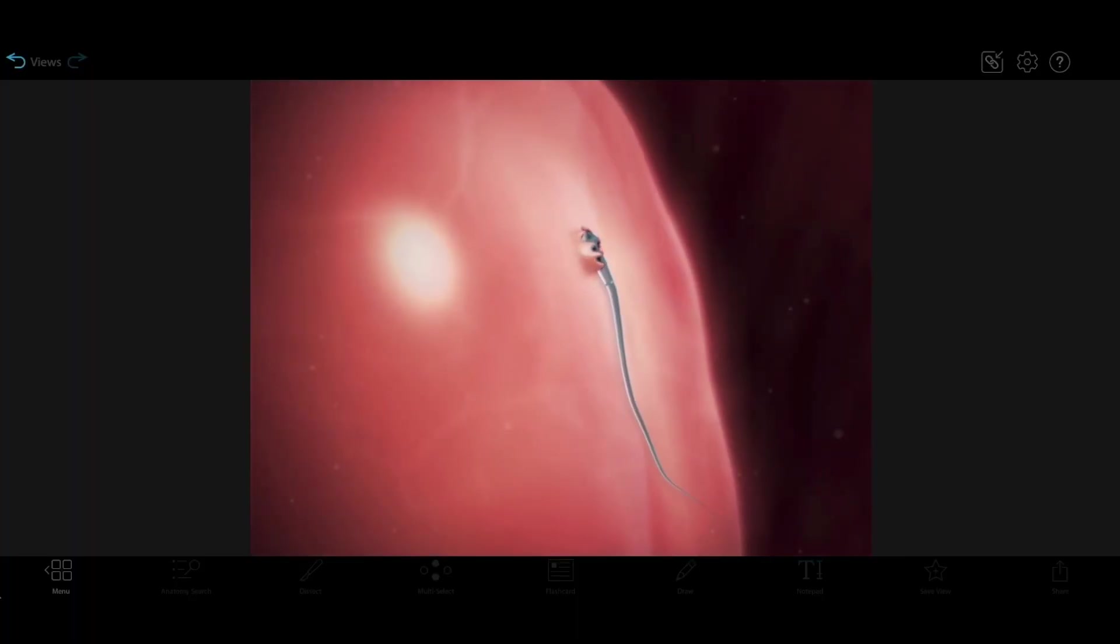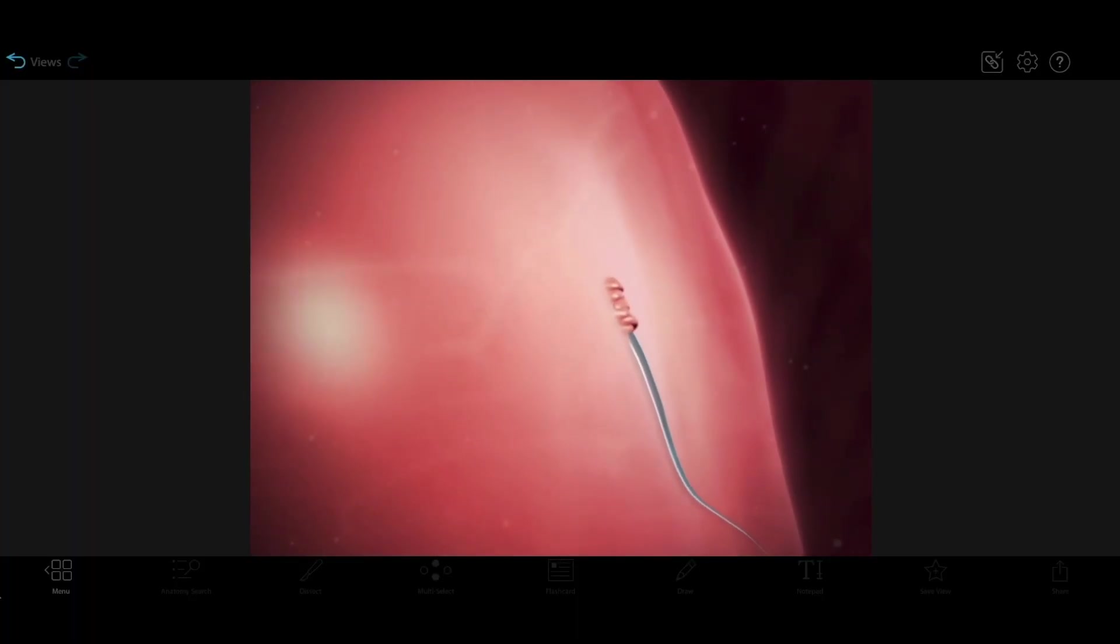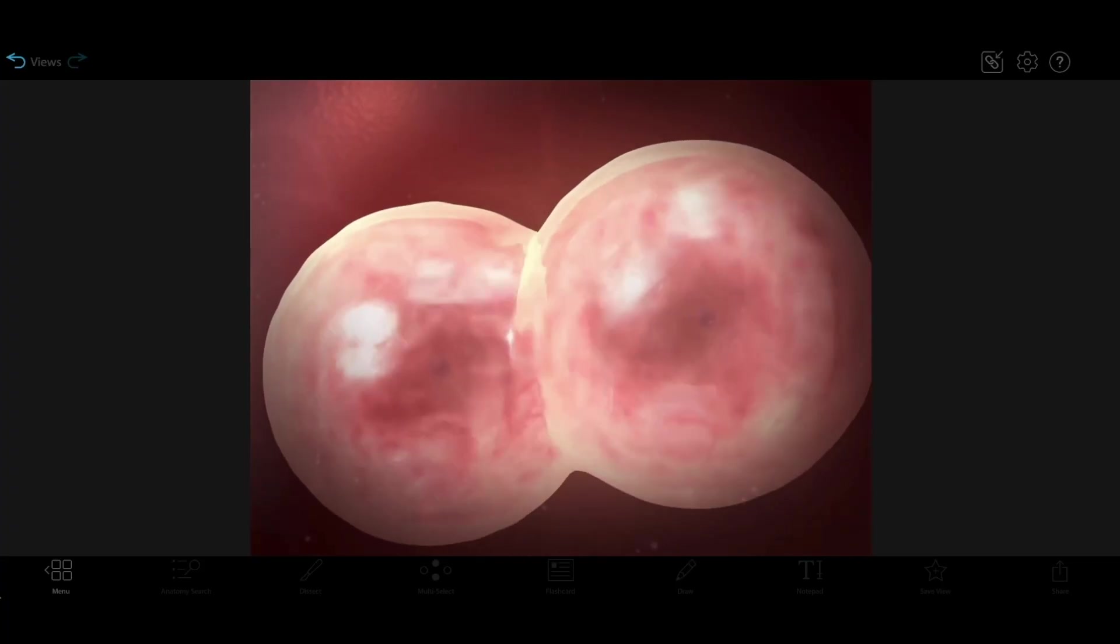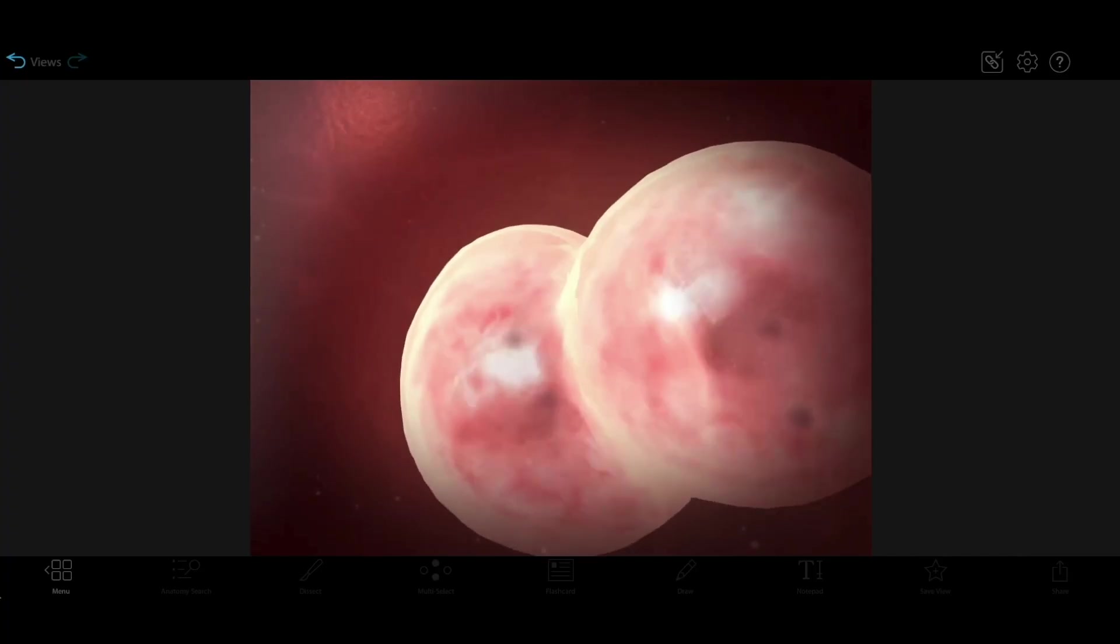Meiosis produces gametes that are genetically distinct from both the original parent cell and from each other. We can watch the fertilization animation here to see that during sexual reproduction, a sperm cell fertilizes an egg, joining two gametes together.